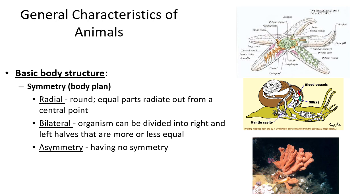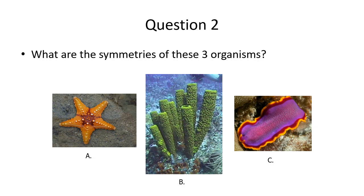Another symmetry type, not listed here, is penta-radial. Sea stars in the top right have five appendages, each equal, so you can split it in five different places, but it's not equal on every point like a jellyfish. Bilateral means it can only be split into left and right halves — only one plane divides it into two equal halves. Asymmetry means no symmetry at all, which is what most sponges are, as seen in the bottom right.